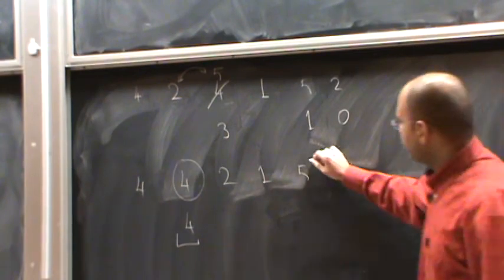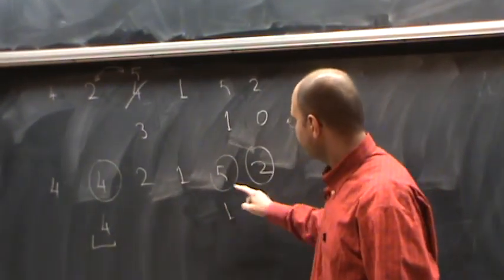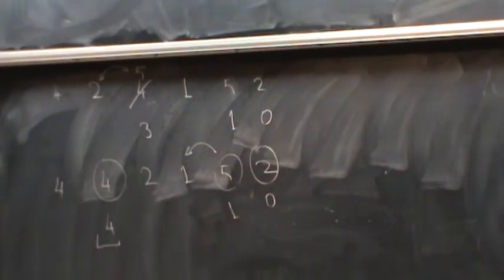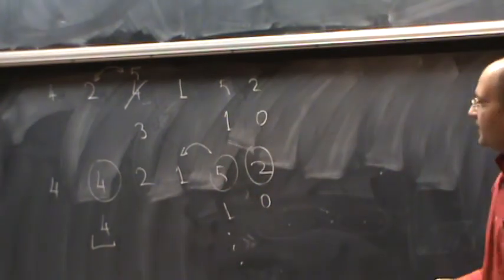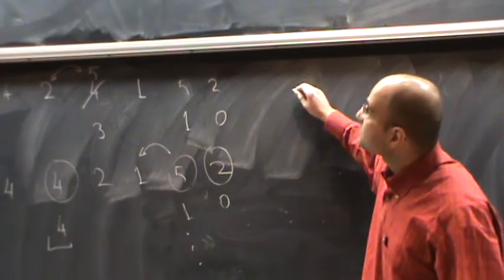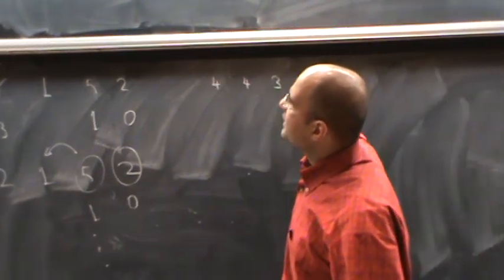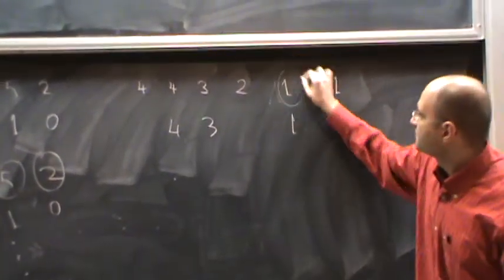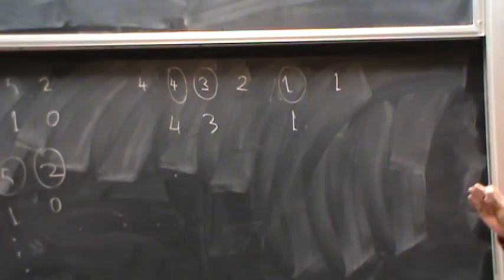You do the same thing for these selected parts. 5 is not in its correct place. You have to swap it with 1. You have to do it once more. And at the end, you will get the decomposition we had there. 4, 4, 3, 2, 1, 1 and 4, 3, and 1. And that's algorithm Z. That's 1, A.